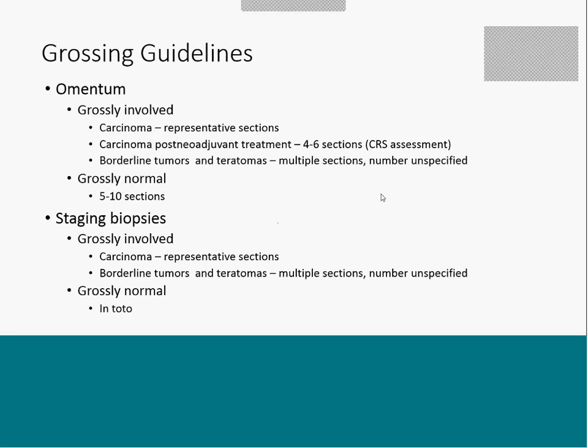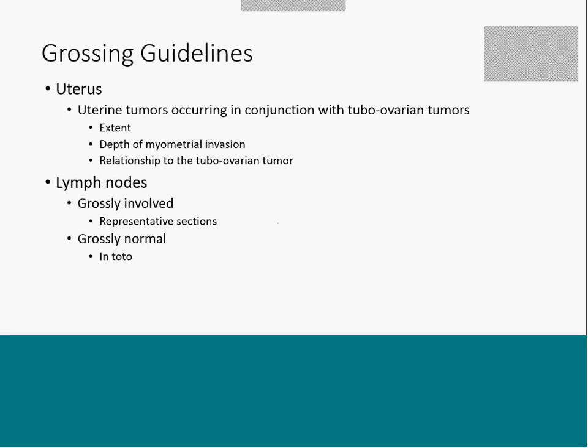For staging biopsies, if there is gross involvement, representative sections are acceptable; however, since staging biopsies are often very small, many pathologists will simply submit them in total. For uterine tumors occurring in conjunction with tubal-ovarian tumors, there are no strict guidelines, but sectioning should be done to document the extent of tumor, depth of myometrial invasion, and relationship to the tubal-ovarian tumor.